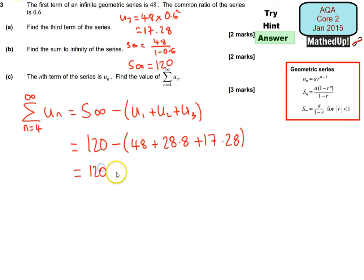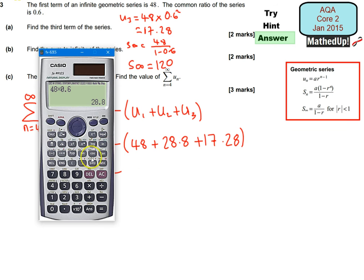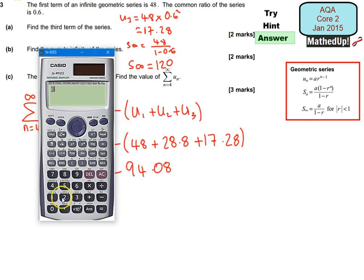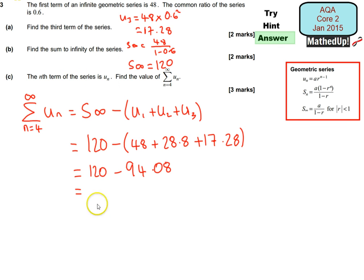So that's going to be 120 take away. And we need to sum those together, so 28.8, I'll write it out, 48 plus 28.8 plus 17.28. And that gives us 94.08. And then 120 take away 94.08 is going to be equal to 25.92. So the value of this here is going to be 25.92.